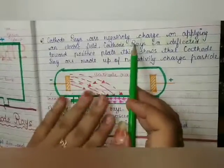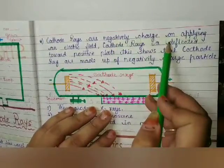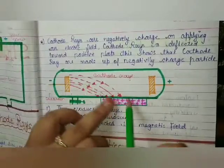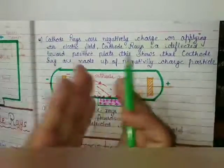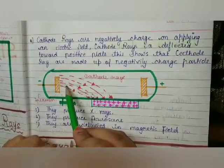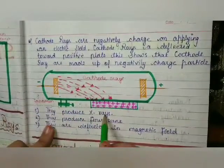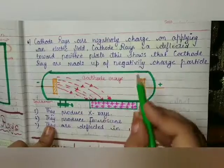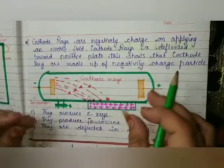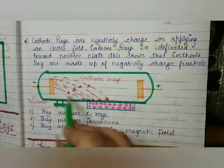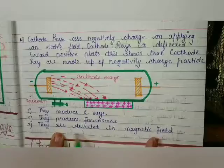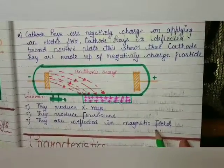Cathode rays are negatively charged because in the electric field, if there is a positive plate, cathode rays attract toward the positive plate — meaning they carry a negative charge. They also produce x-rays when a metal is kept on the anode side. Fluorescence is produced, and cathode rays deflect in a magnetic field.